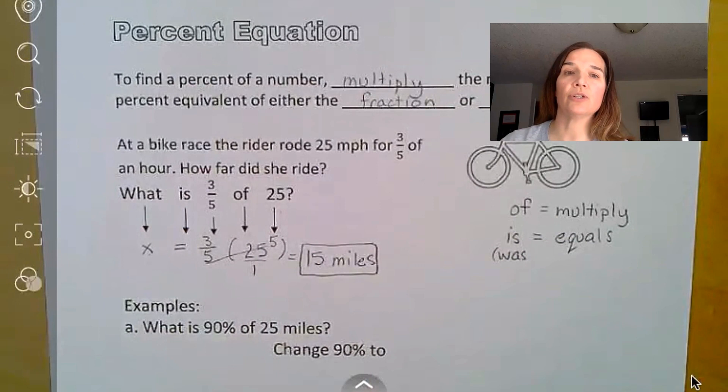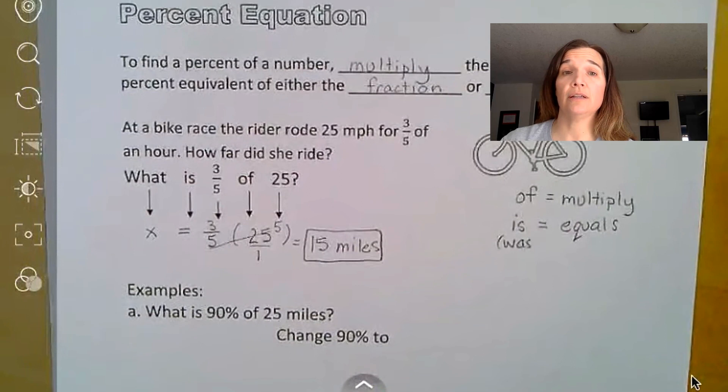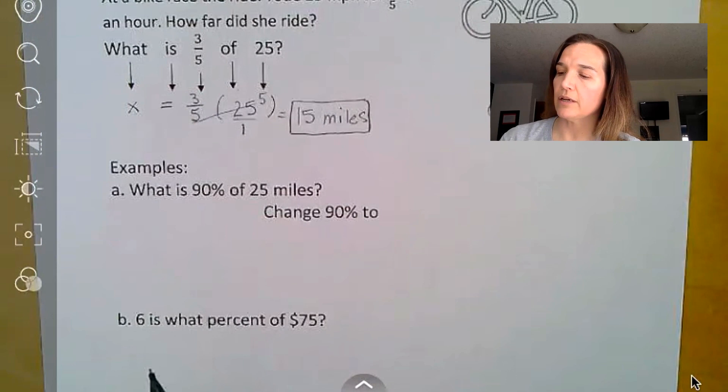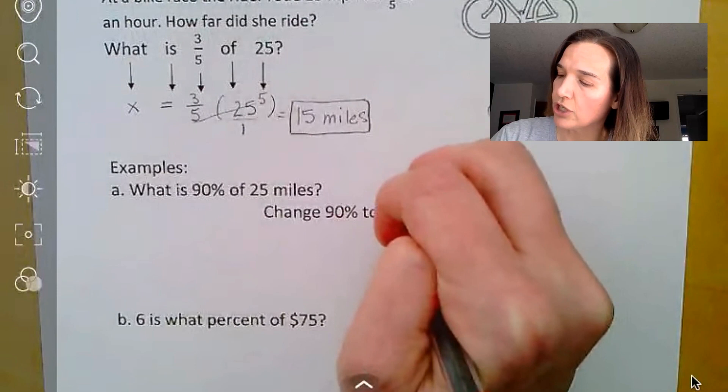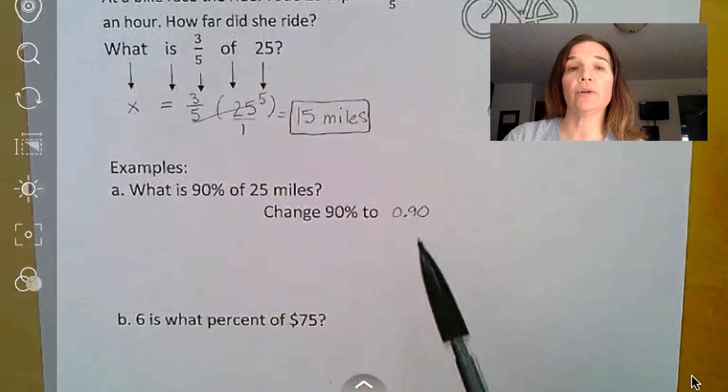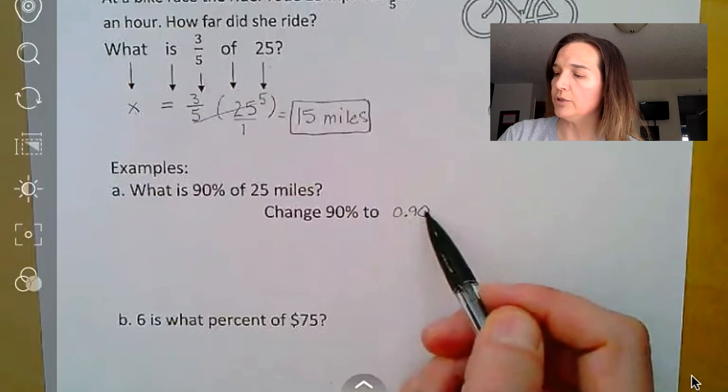So here we have three more examples. We're going to be translating again the word problem into a math equation, and then solving. So first one here for A, what is 90% of 25 miles? Notice we have a percent here, and so we're going to have to change this to either fraction or decimal. I'm going to change them into decimals here, but you can use fractions like you see up above, and I'm going to use the number 0.9.